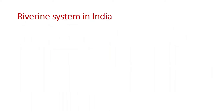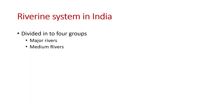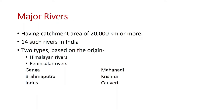Talking about the riverine system in India, it is divided into four main groups. Most rivers pour their water either into the Bay of Bengal or into the Arabian Sea. The four groups are: major rivers, medium rivers, minor rivers, and desert rivers. Major rivers have a catchment area of approximately 20,000 km² or more — the catchment area being the land where precipitation collects and drains into a common outlet. There are 14 such major rivers in India.